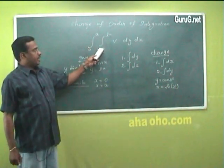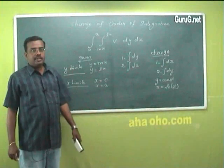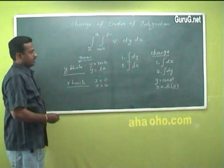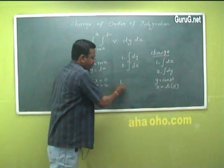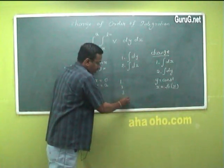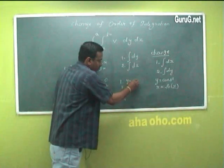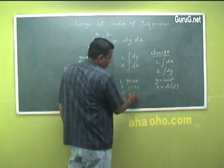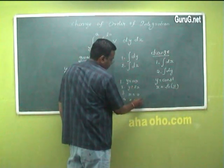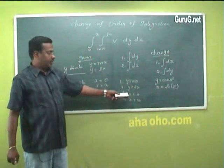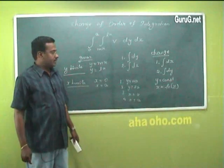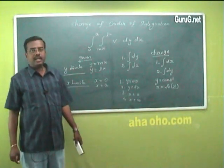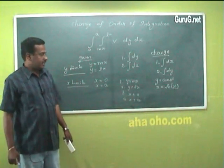Let me explain the concept through an example. The first step is you have to draw the region of integration. For that, you have to draw the lines y = mx, y = lx, x = 0, and x = a. We know that x = 0 is nothing but the y-axis, and x = a is a straight line parallel to the y-axis.